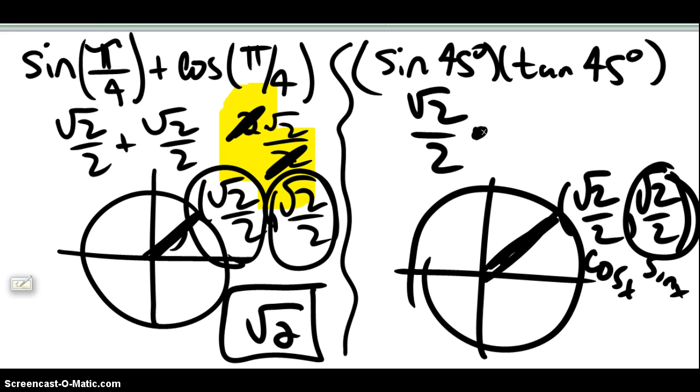Now, tangent is not on the unit circle, but you know that the definition of tangent is sine divided by cosine. All right, and so because you know that, you can take the sine, which is square root of 2 over 2, divided by square root of 2 over 2, which is 1.